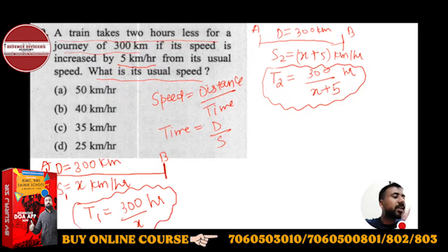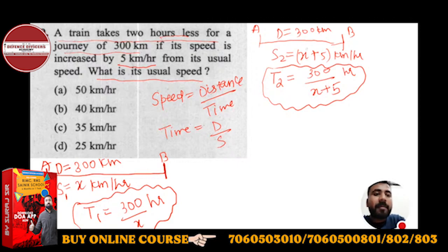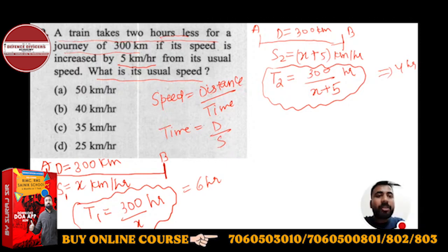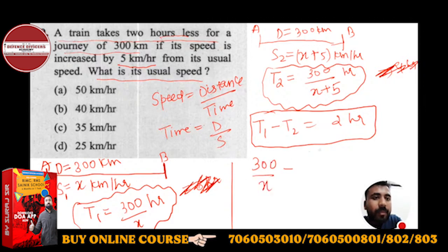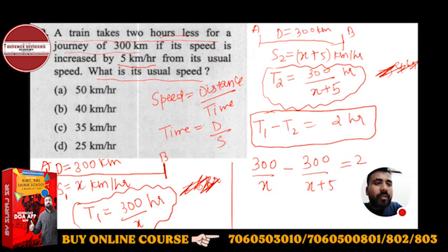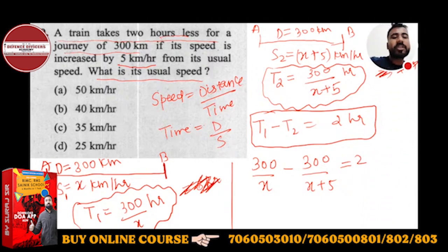What is given in this question is the difference in time — 2 hours less. T2 is 2 hours less than T1. So if T1 is 6 hours, T2 would be 4 hours. So T1 minus T2 gives the difference in time, which equals 2 hours. So the equation is: 300 upon x minus 300 upon (x plus 5) equals 2. Solving this gives a quadratic equation, which you can solve by splitting the middle term or by Sridharacharya's method. But since we have options, let's use them.